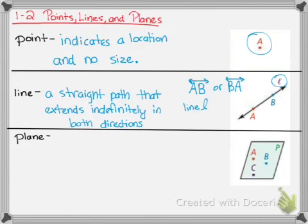Alright. And then the last thing we have is a plane. Alright. A plane is a flat surface that extends without end. So you can think of it as a piece of paper that goes on forever and ever in all directions.